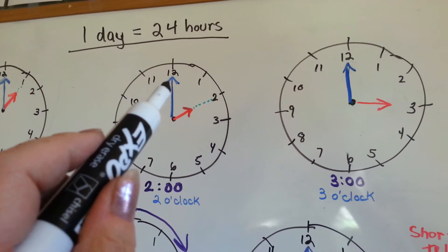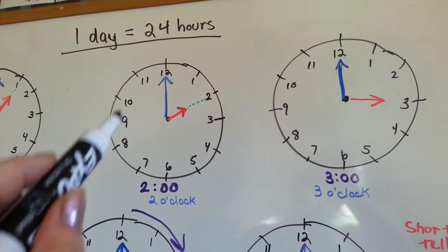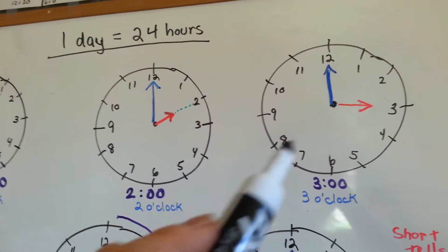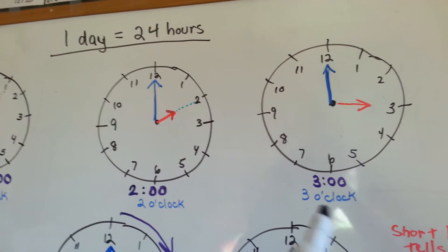Then the blue hand, the minute hand, goes all the way around to the 12 again, and it moves the hour hand to the 3, so it's 3 o'clock.